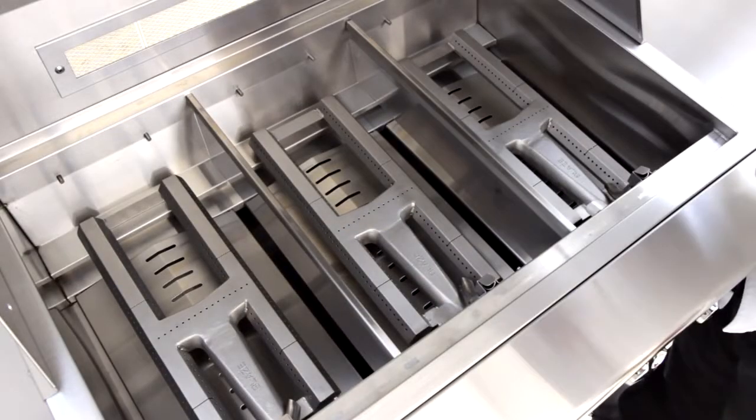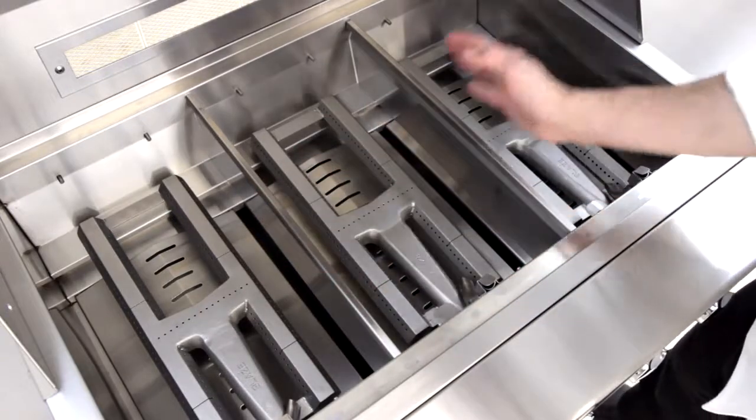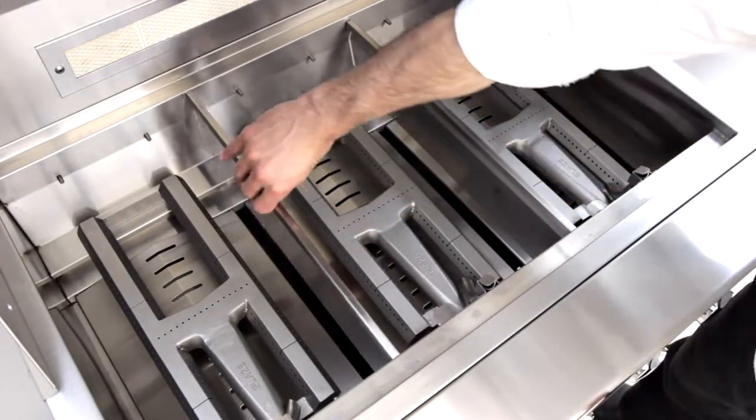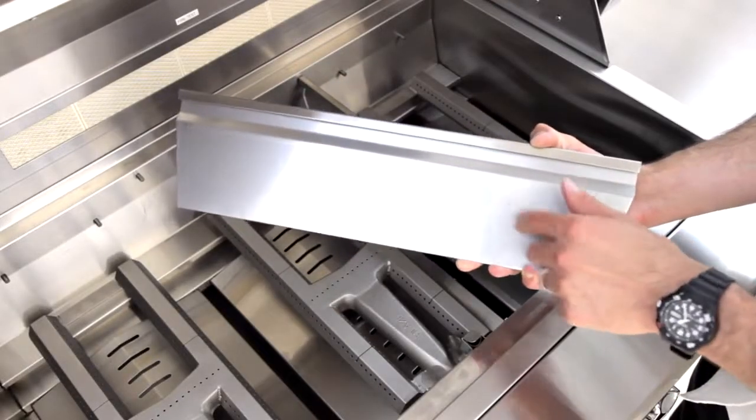Between each burner, the Blaze Professional has heat zone dividers, which make it easy to section off different temperature zones across the grill surface, allowing you the flexibility of a sear zone on one end, while having lower finishing temperatures on the other.